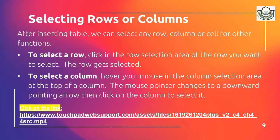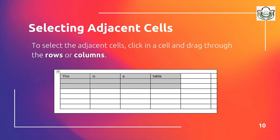Selecting rows or columns: after inserting a table, you can select any row, column, or cell for other functions. To select a row, click in the row selection area of the row you want to select. To select a column, hover your mouse in the column selection area at the top of a column — the mouse pointer changes to a downward pointing arrow — then click on the column to select it. To select adjacent cells, click in a cell and drag through the row or column.